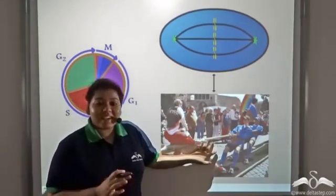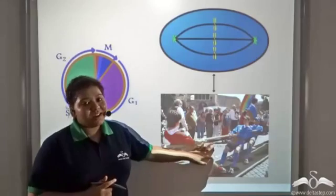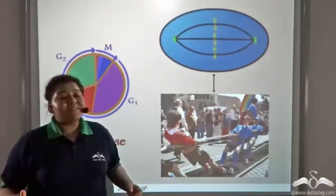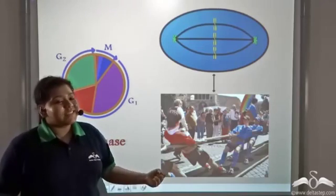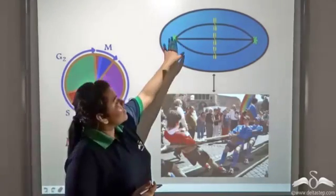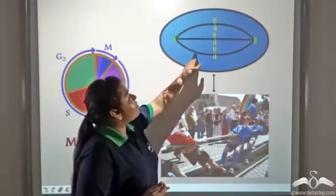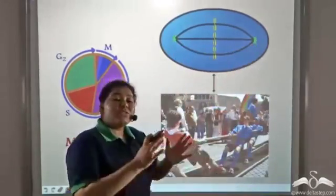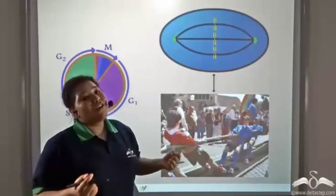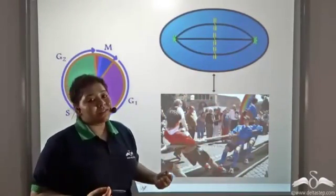Now just like a game of tug of war, when two opposing teams pull a piece of rope in opposite directions, similarly, spindle fibers given out by centrosomes pull the two identical strands of a chromosome towards the two poles.